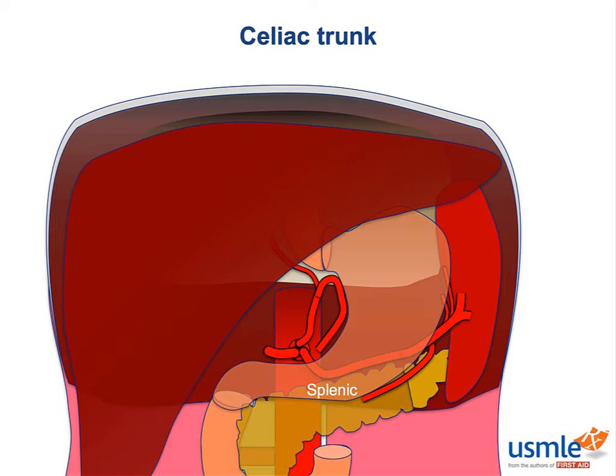The most complicated of these by far is the common hepatic artery, and it's really got two trunks. The first is the gastroduodenal, heading inferiorly, and the second is the proper hepatic artery, heading superiorly.